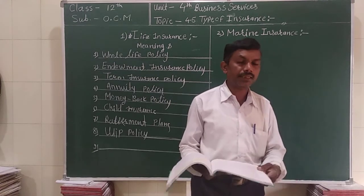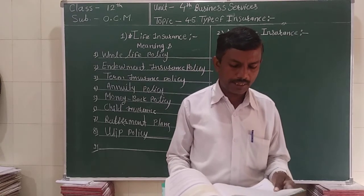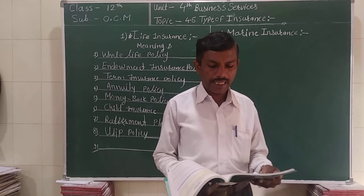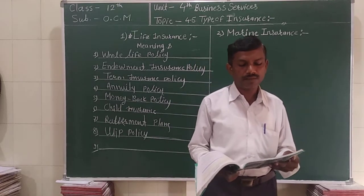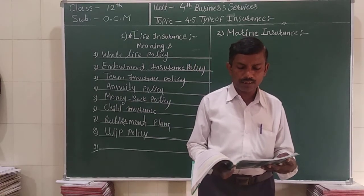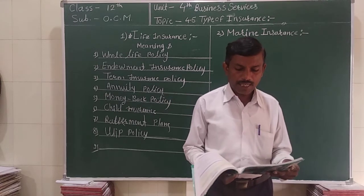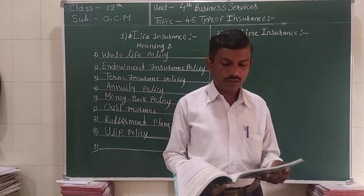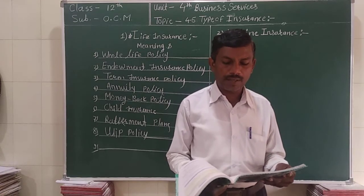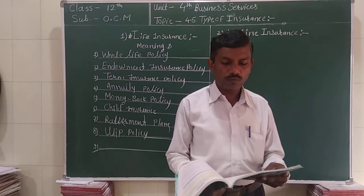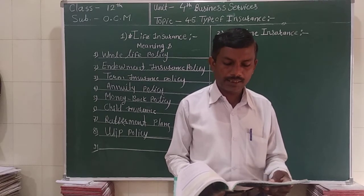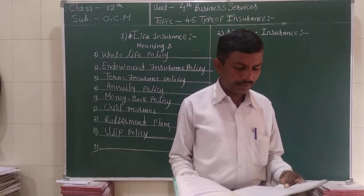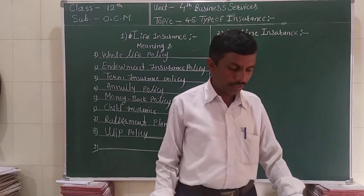The sixth type is child insurance. The child insurance policy is a savings and investment plan designed to meet future financial needs. It helps fulfill the child's dreams. Advantages include early start of investment, income at the right time, provision for premium, and withdrawal of savings at certain intervals.